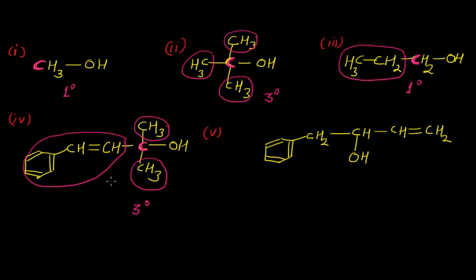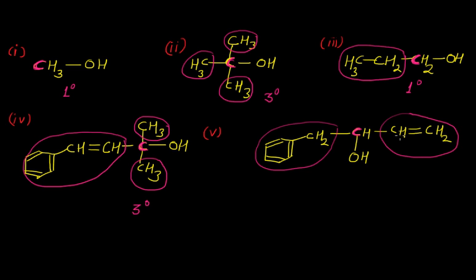We do not need to worry about which alkyl group is present — we just need to focus on how many hydrogen atoms get replaced by any alkyl group. In example 5, we look at the carbon where the OH group is present. One hydrogen is replaced by one group and another hydrogen is replaced by a different group, meaning two hydrogen atoms get replaced by two different alkyl groups, and therefore this compound is a secondary alcohol.